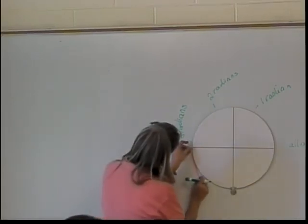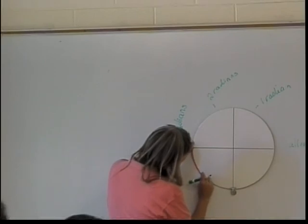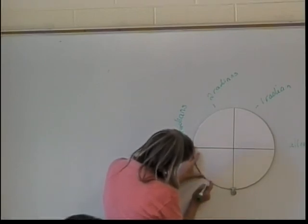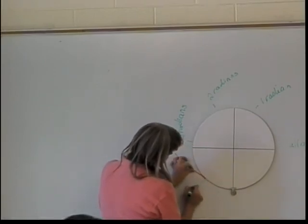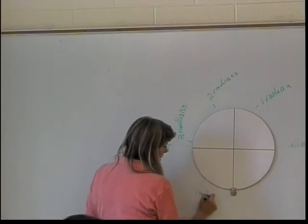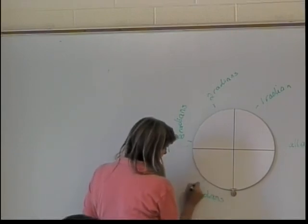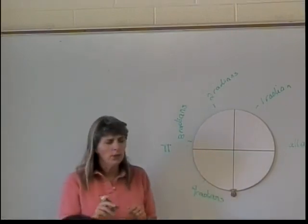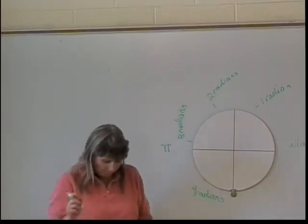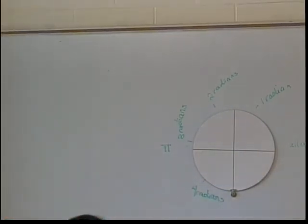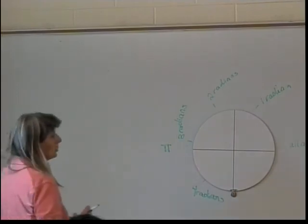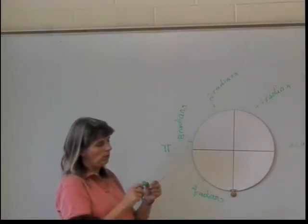So you think this is going to be in quadrant three. So let's go put it around. So right here is four radians. Where do you think five radians will be?